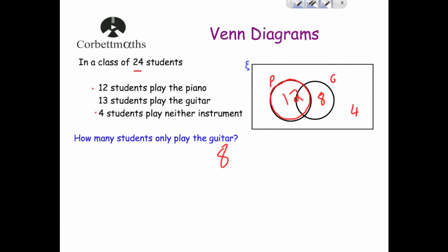Let's fill in the rest of the Venn diagram. We know 13 play guitar and 8 are guitar-only, so there must be 5 in the middle (since 5 + 8 = 13). We know 12 play piano and 5 are in the middle, so 7 are piano-only. So the Venn diagram has 7 (piano only), 5 (both), 8 (guitar only), and 4 (neither). The answer to how many students only play guitar is 8.